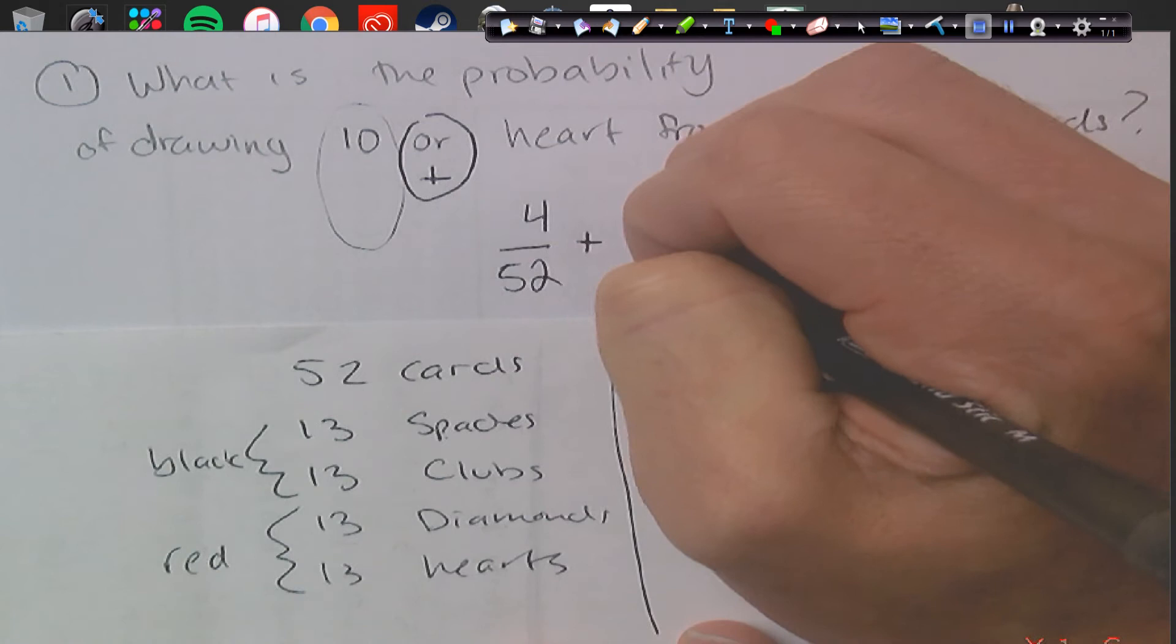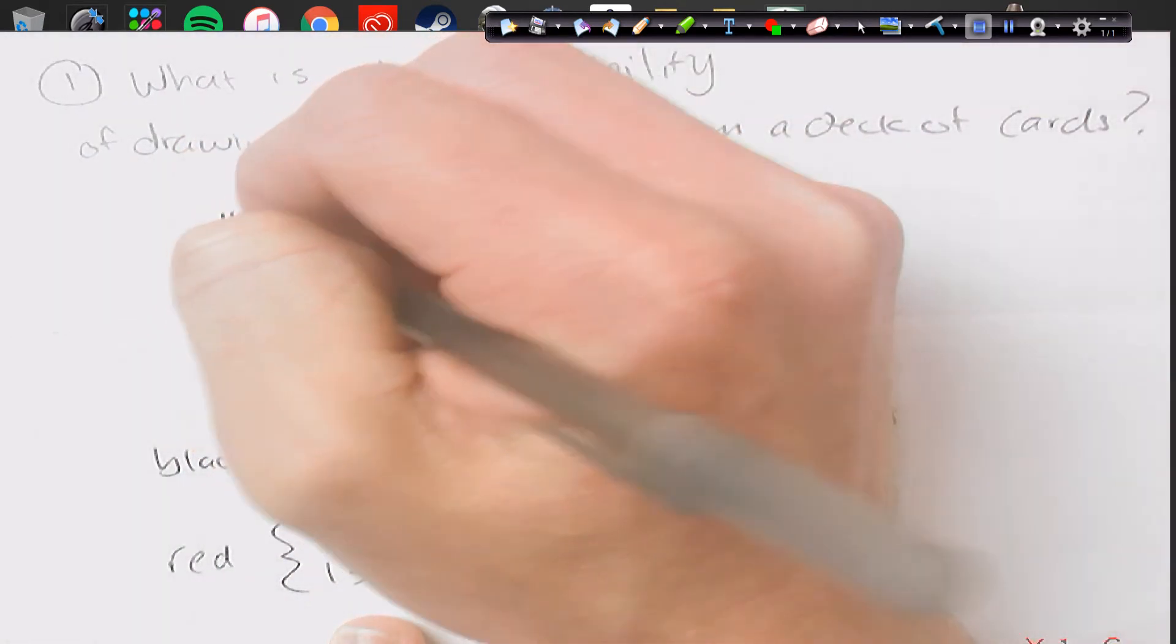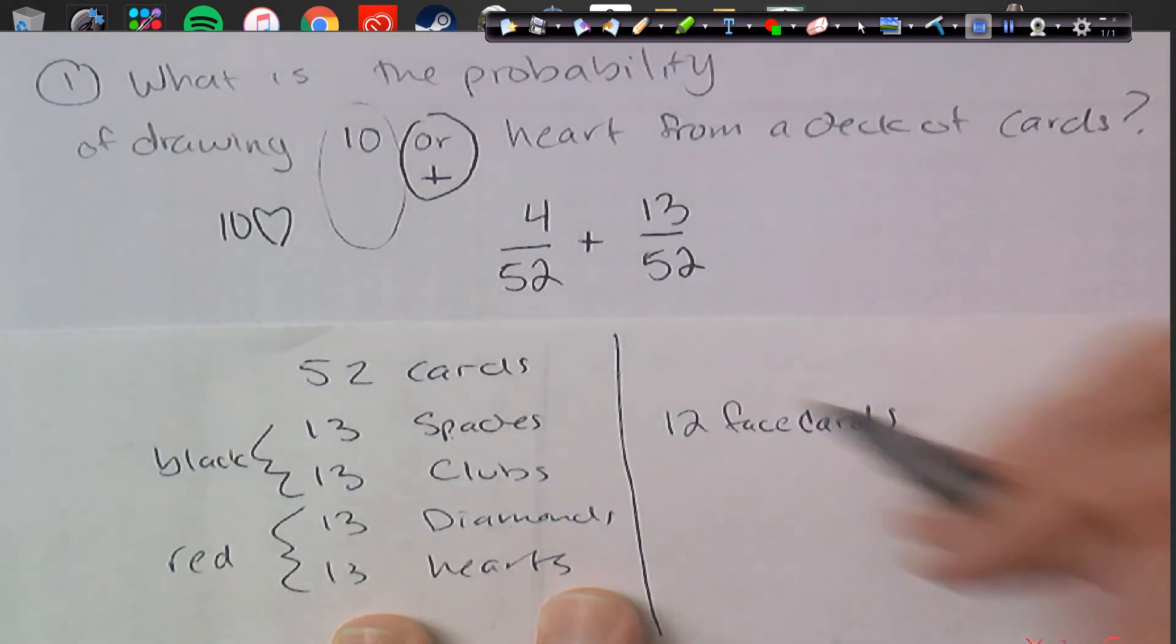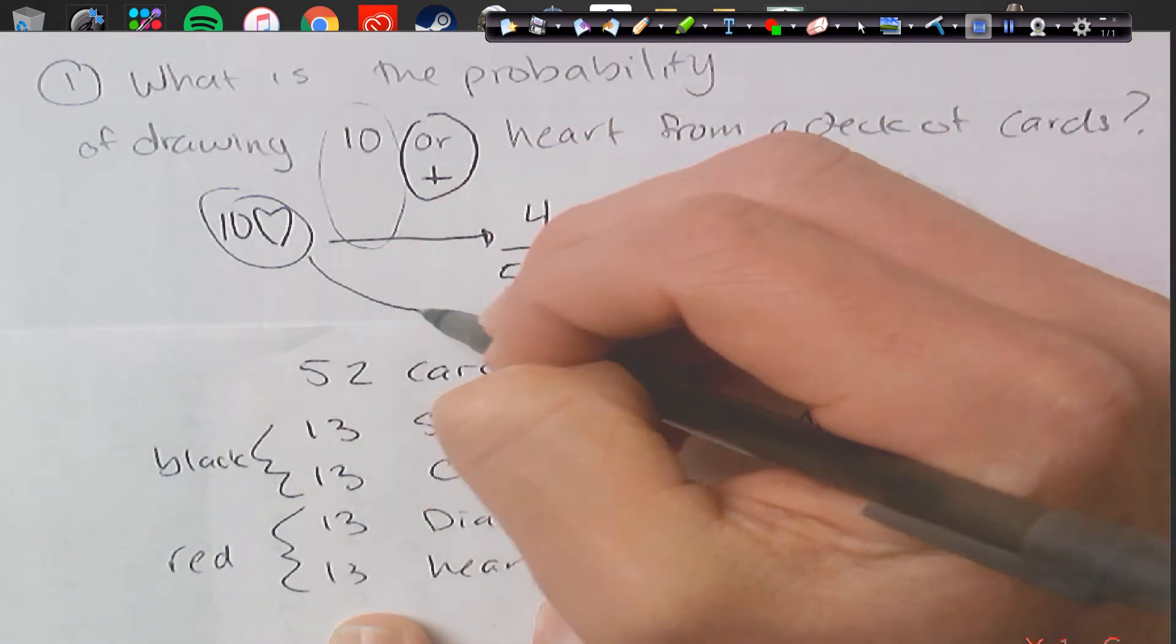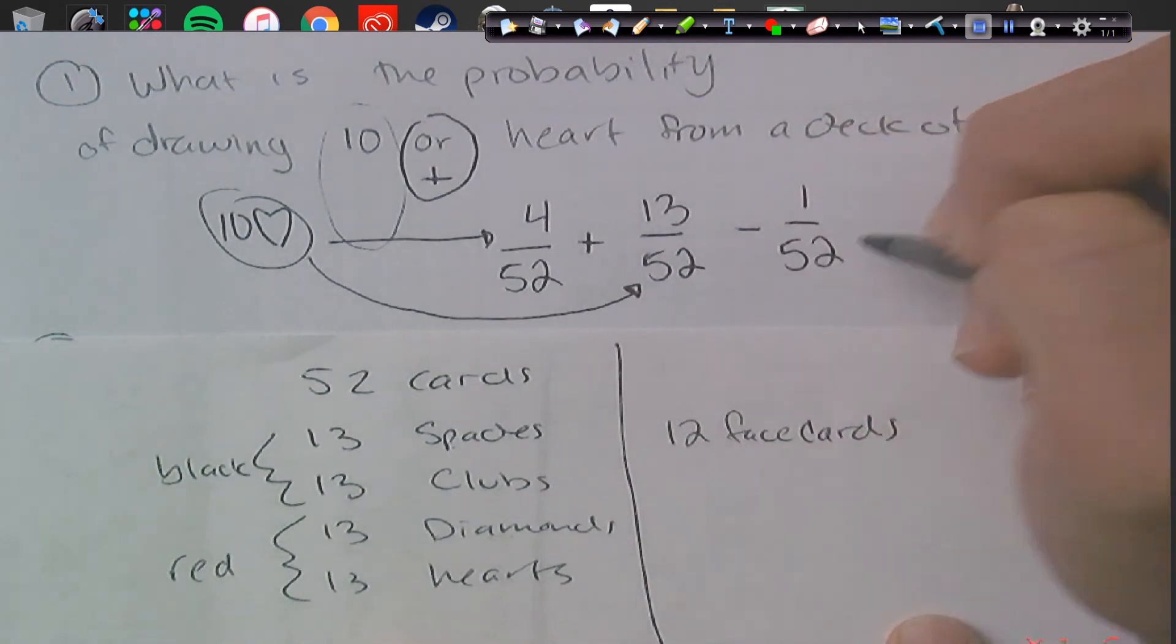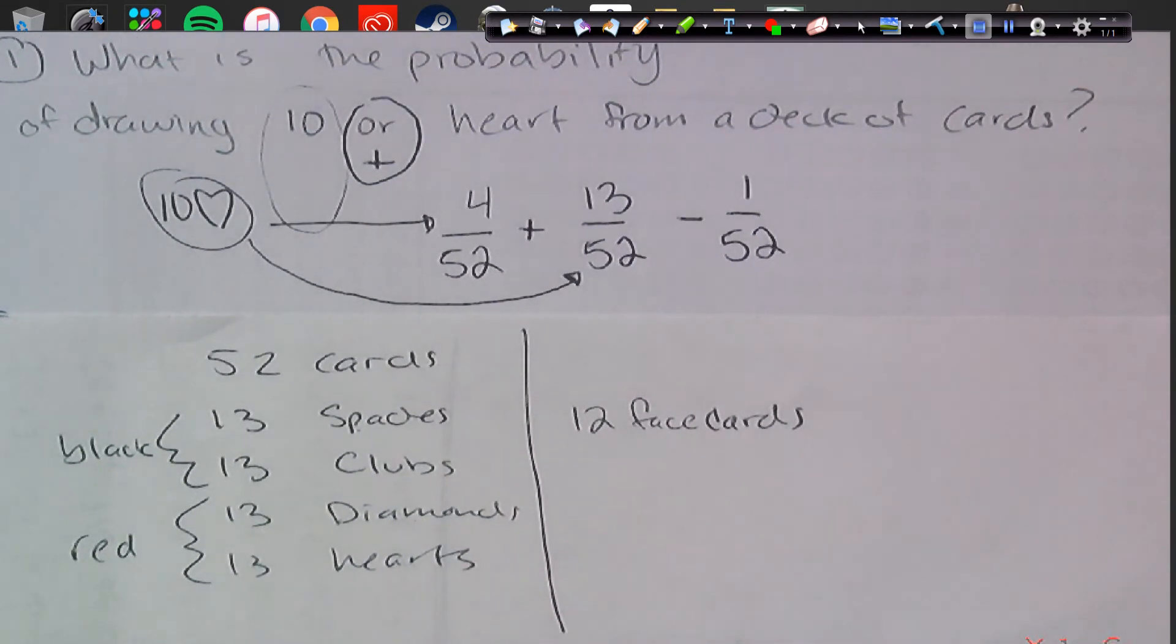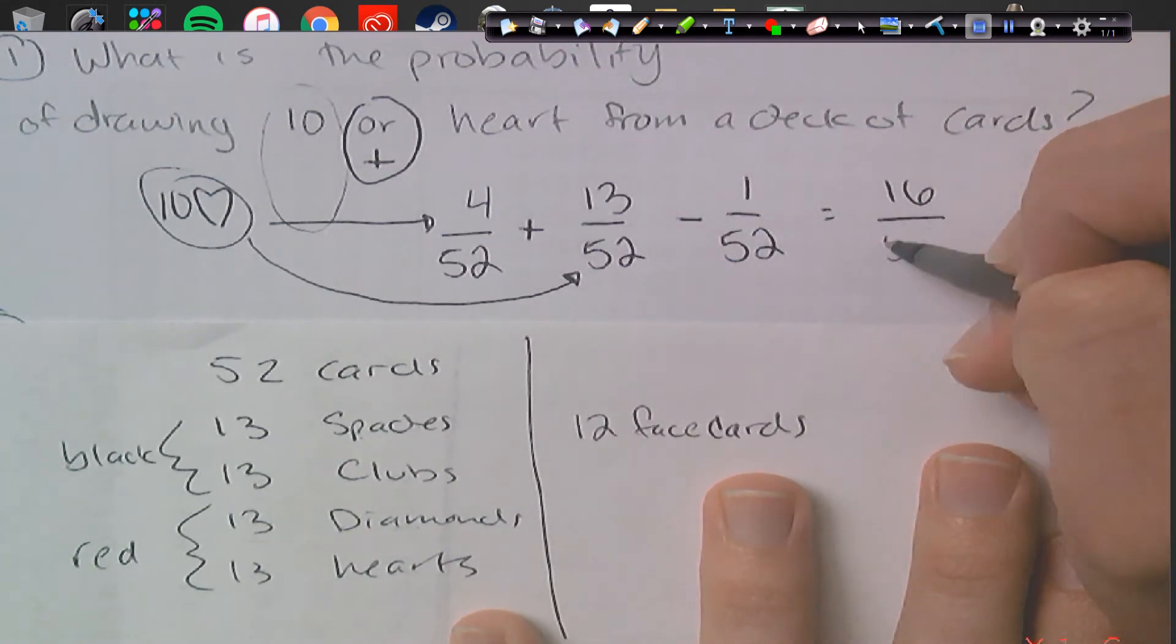However, if we add these, our answer is incorrect. And the reason why is because we double-counted a card. If you guys knew this, there is actually a 10 of hearts card, which means we counted it once here, and we also counted it once there. It got counted within the 10s, and it also got counted in the hearts. So to remedy this, we're going to have to subtract one of those cards so we don't double-count it. So you could do the subtraction method, or we could just say instead of 13 hearts, there's really only 12 hearts available.